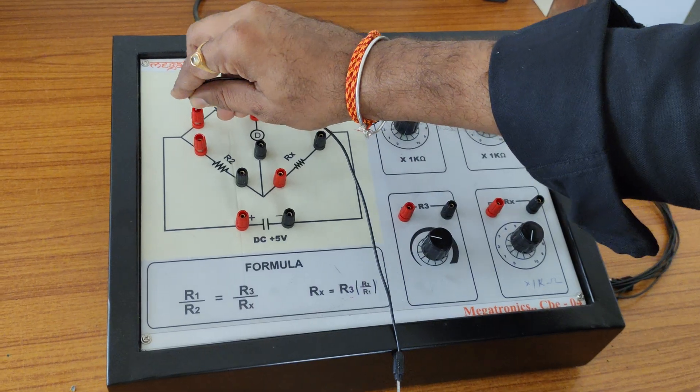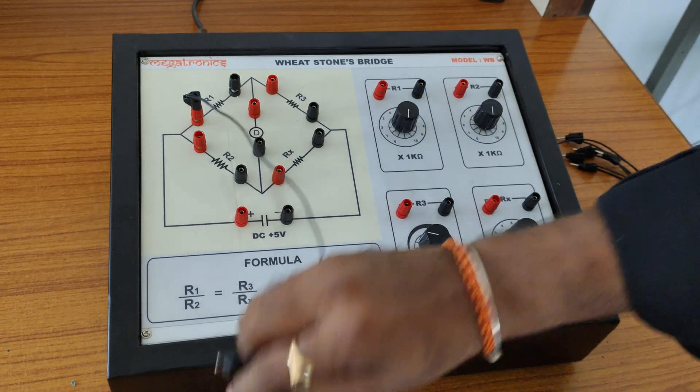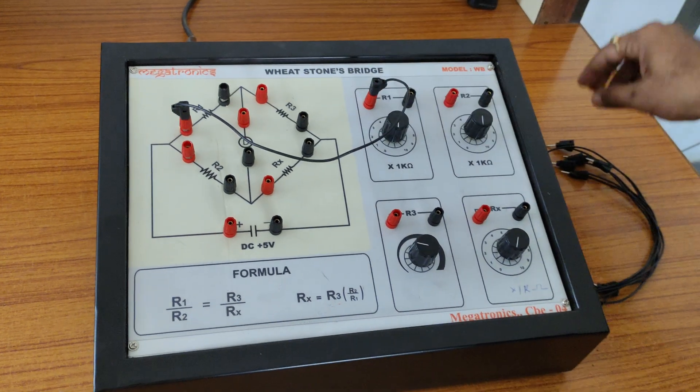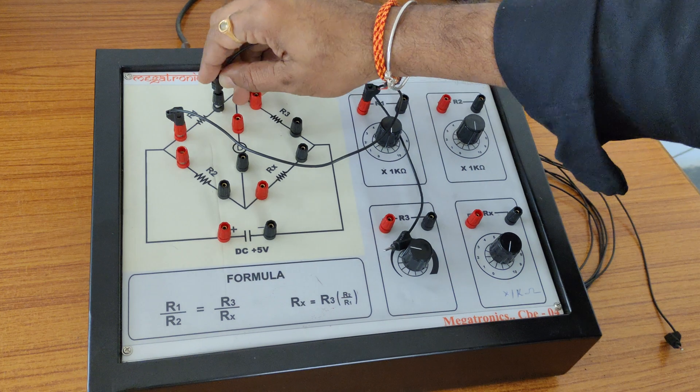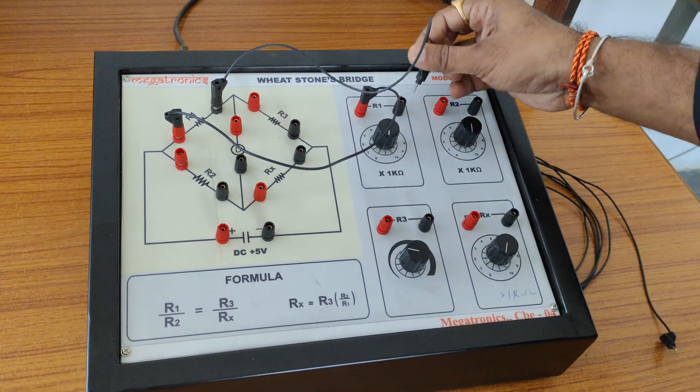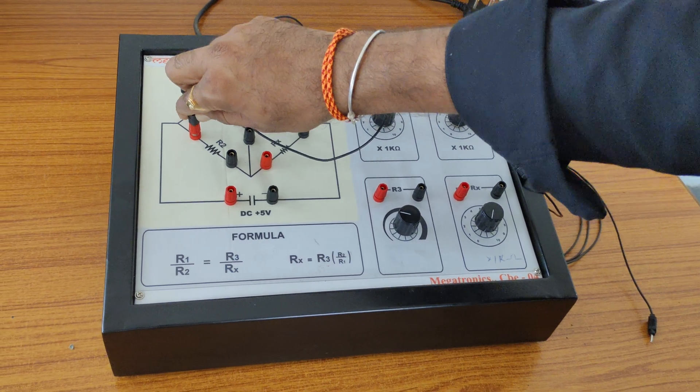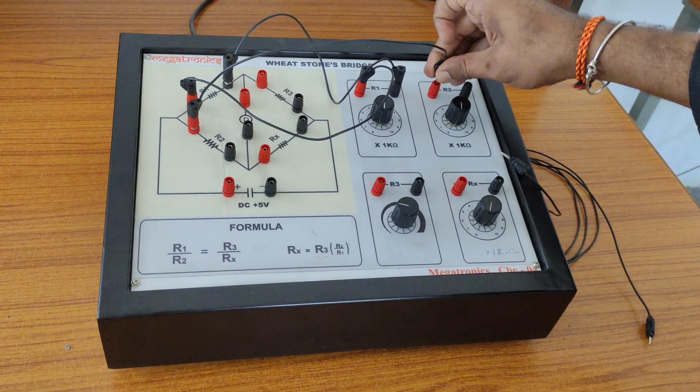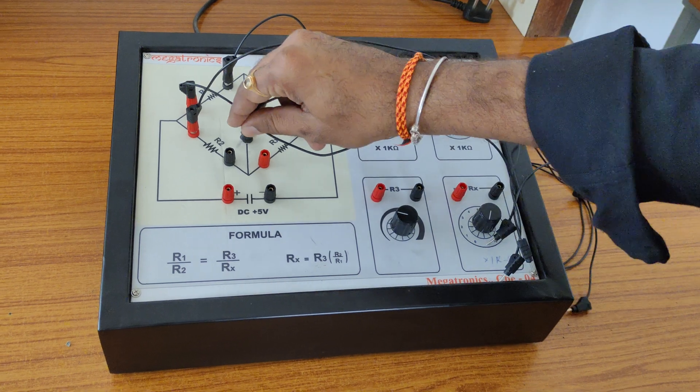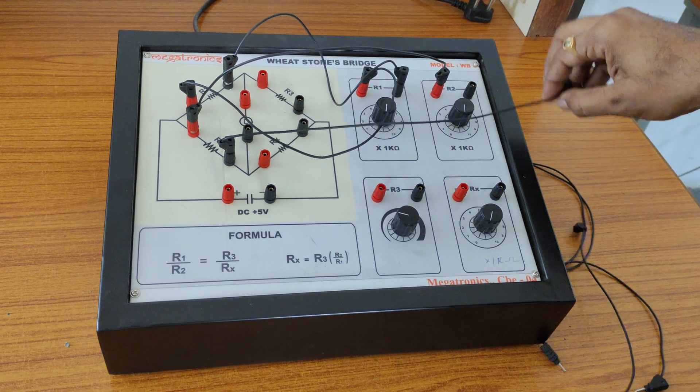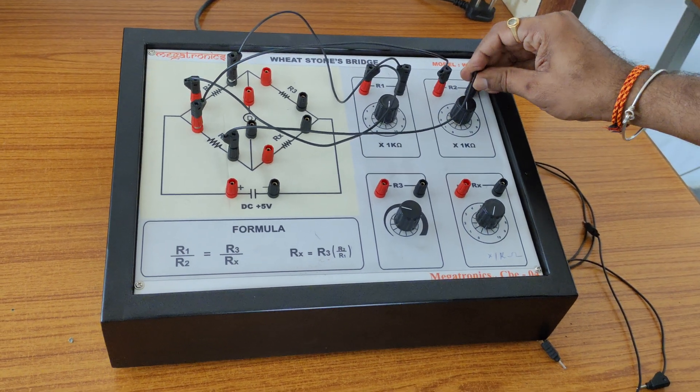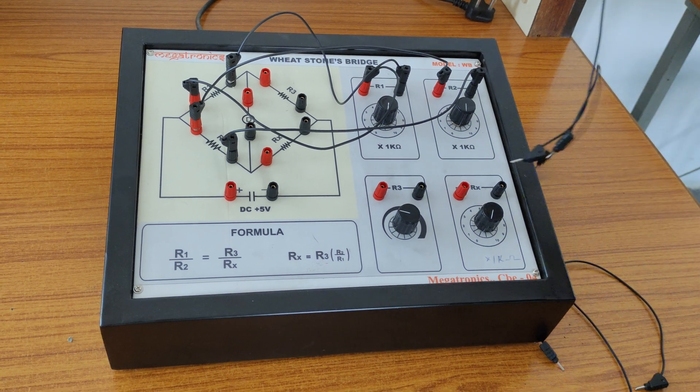Going to connect these connections like this R1 positive to this R1 positive. Again, this R1 negative to this R1 negative. Same R2 to R2 parts. These are the patch codes we are connecting right now.